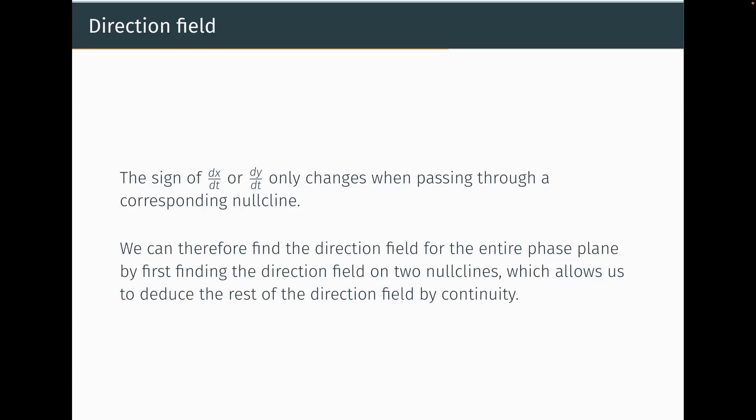There is a slight caveat: it's mathematically possible for dx/dt to touch zero and return to the same sign on both sides of a null cline without changing sign. However, in mathematical biology this represents a knife-edge scenario that doesn't make a good biological model, so we never deal with those cases. In all cases we look at, the sign will change as you pass through a null cline.